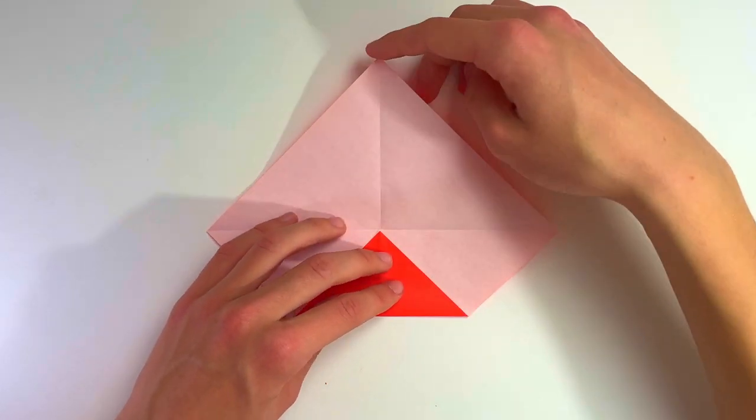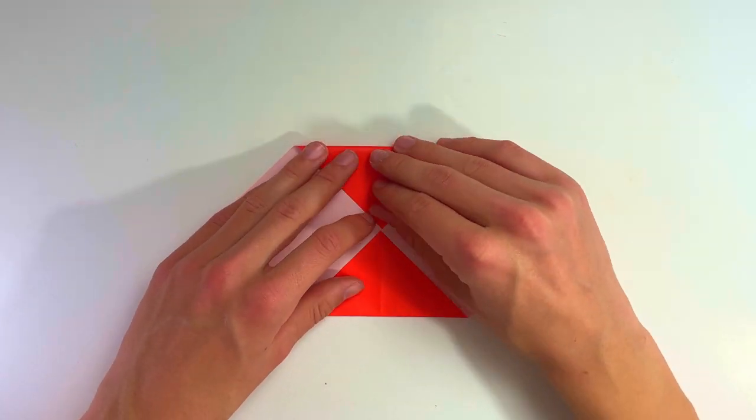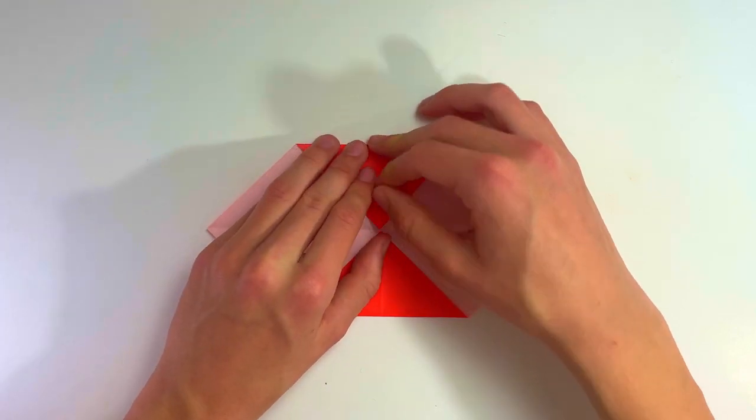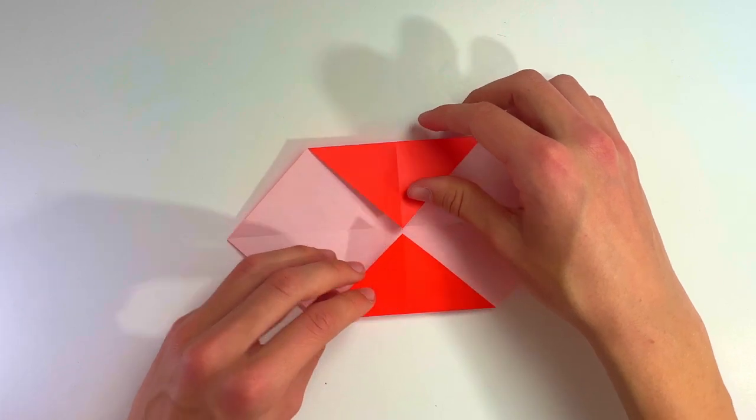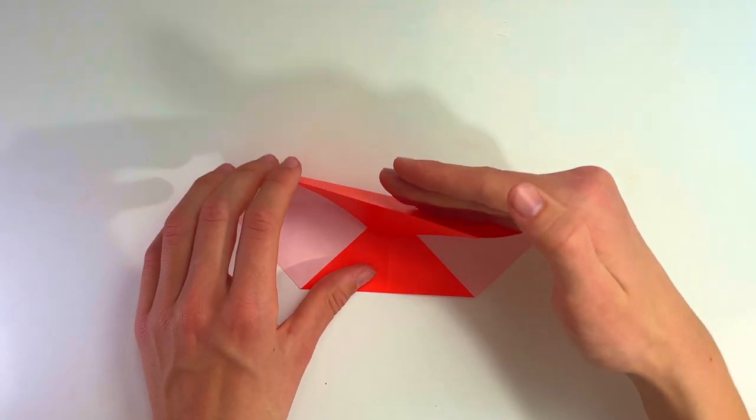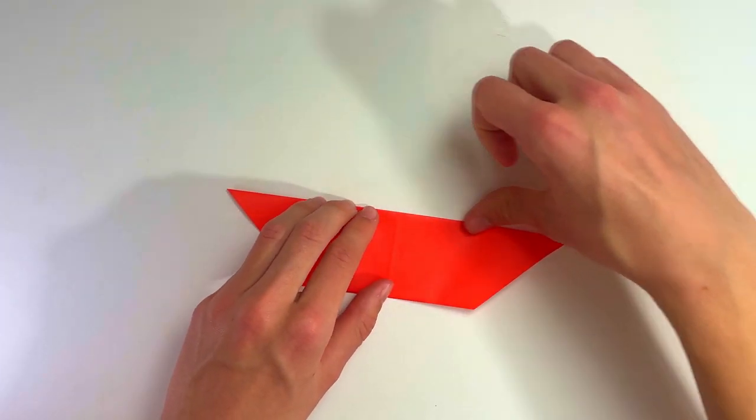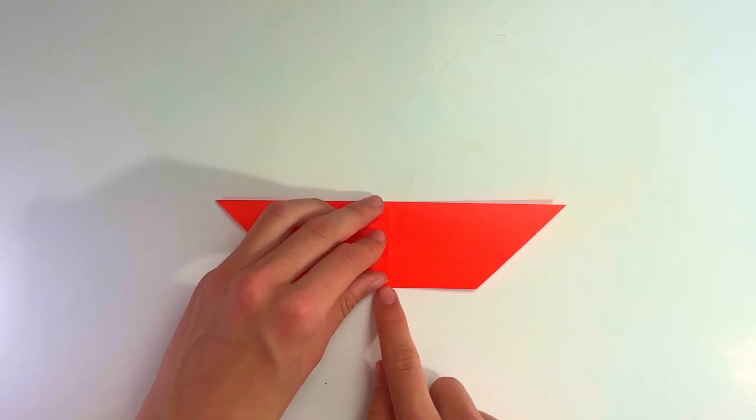Once we've done that, we're going to bring that top layer downwards. Just close it up and flatten everything correctly.